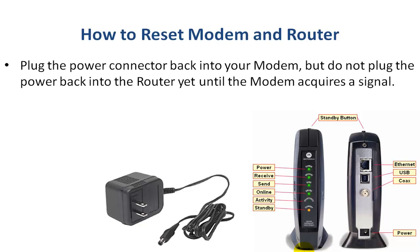Now here's the important part. Plug the power connector back into your modem first, but don't plug the power back into the router yet until the modem acquires a signal. Modems have different indicator lights — on a cable modem there may be a light labeled 'Online' or 'Cable.' What you want to see is that light on steady, not blinking. A steady light means the modem has acquired a signal.